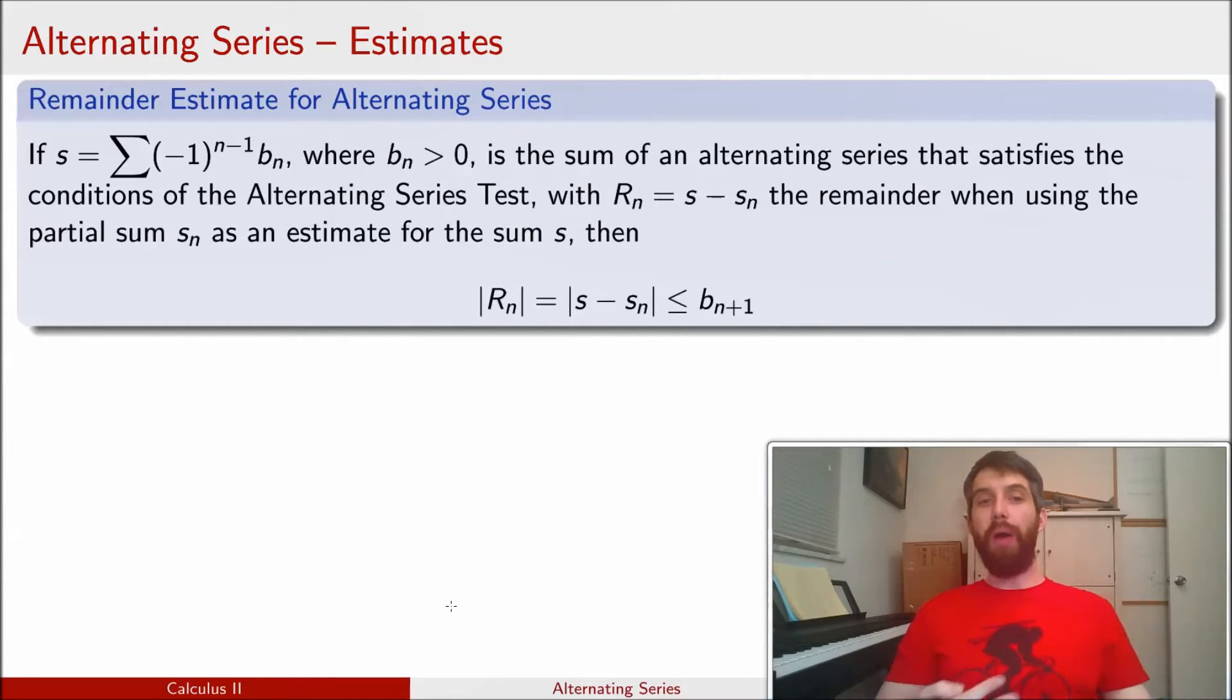So we want to know, how many terms do I have to use so that I'm within the uncertainty, and what is the value that I'm going to approximate this sum by? So one of the nice things about an alternating series is that I have this really nice formula for what the remainder is.